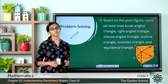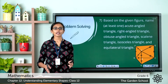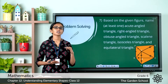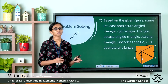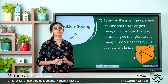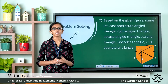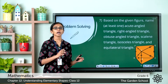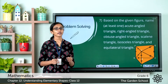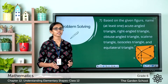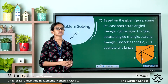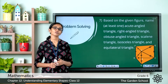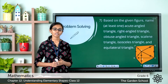Based on angles, we classify triangles as acute angle triangles, right angle triangles and obtuse angle triangles. An acute angle triangle has all interior angles less than 90 degrees. A right angle triangle has one angle equal to 90 degrees. An obtuse angle triangle has one angle greater than 90 degrees.